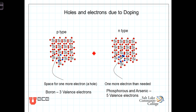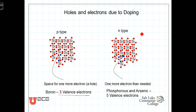Through a process known as doping, silicon atoms can be replaced in the crystalline structure with other atoms known as dopants. There are two different types of dopants typically used. A P-type dopant has only three valence electrons — boron, for example, where the blue electrons are the boron electrons, and there are only three valence electrons. When such an atom replaces a silicon atom in the crystal, a hole is formed — a place where there's room for one more electron. Although still electrically neutral, there is one orbital that's not filled. Boron is a common P-type dopant.